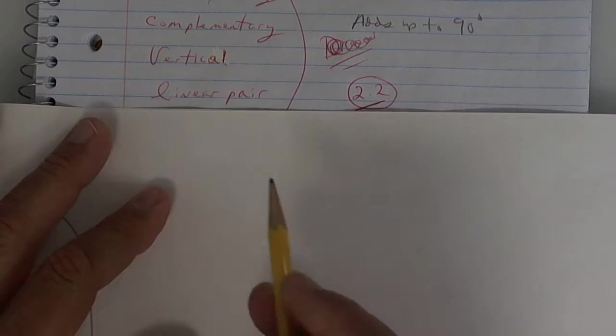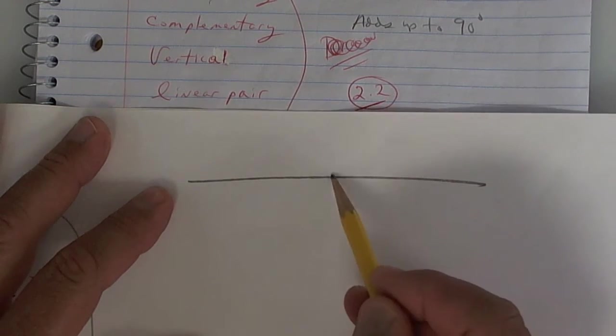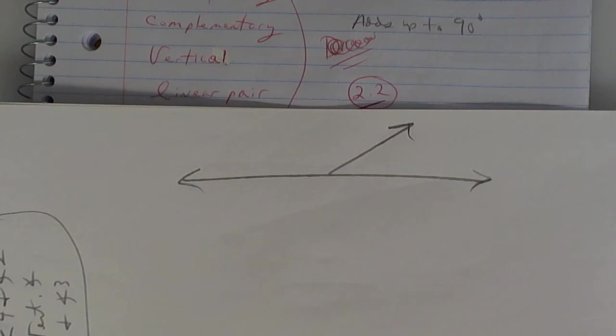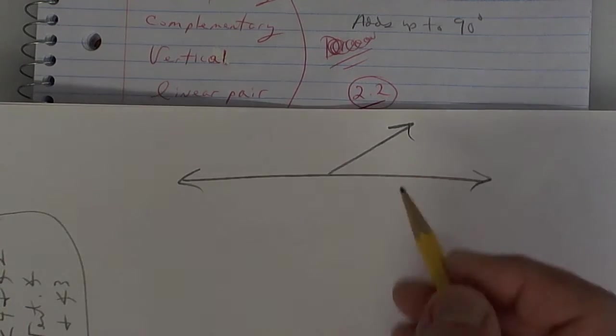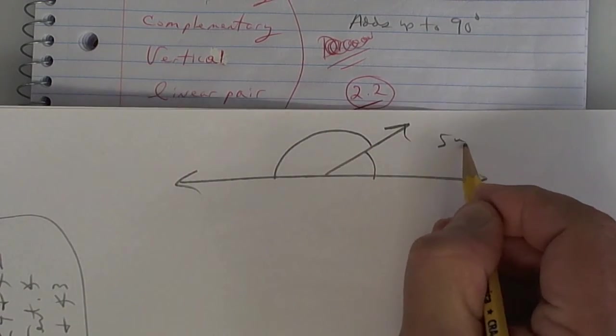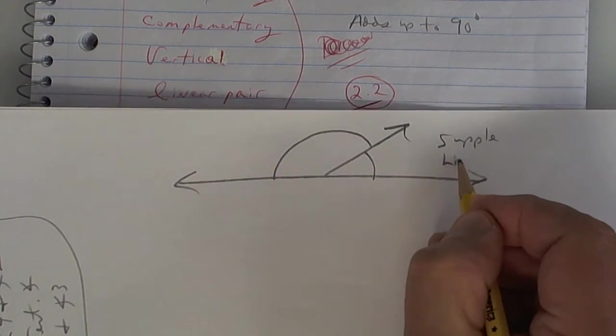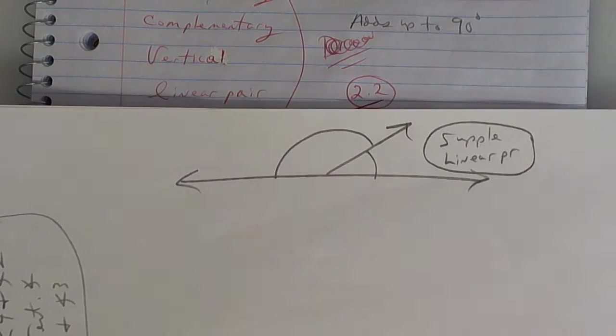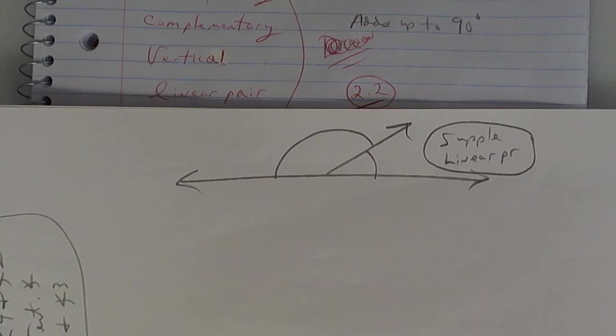All right. Linear pair. Draw a line. Draw a ray. Draw a line. Draw a ray. This one and this one are supplementary, but they're also a linear pair. It's like the same thing. Don't confuse them. They're both the same. Is everybody with me so far? If they say linear pair in your head, you're thinking 180 degrees. Supplementary.